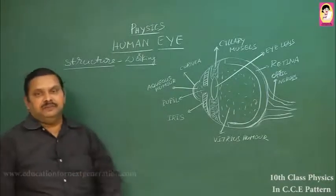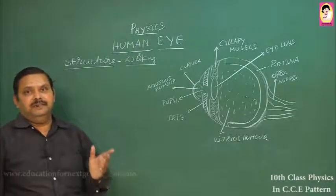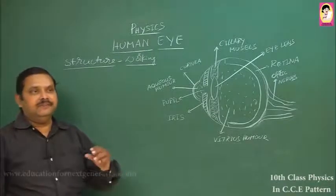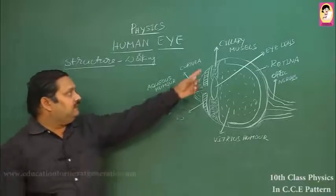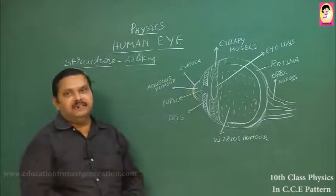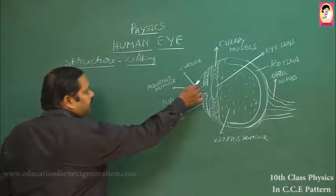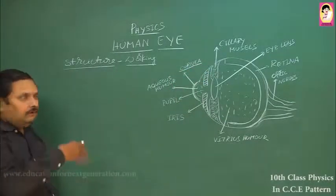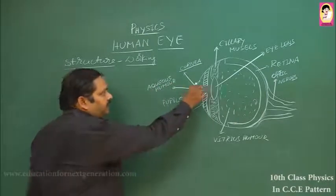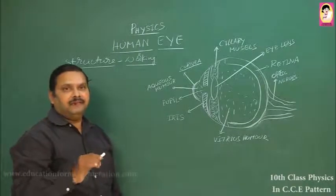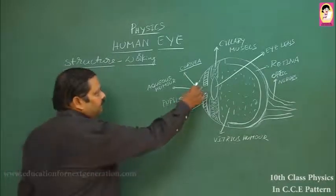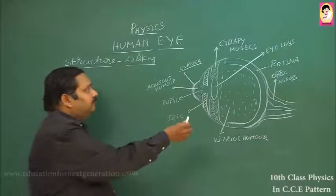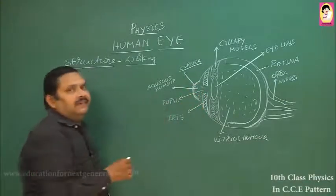Let us come to the structure part first. The human eye is approximately in the shape of a sphere, and its diameter is nearly 2.3 to 2.4 centimeters, which varies slightly from person to person. This is the cross-section of the human eye. The front portion of the human eye which is bulged out is called the cornea. Cornea is a transparent membrane, meaning it allows light rays to pass through. Because of its bulged-out shape, it can accommodate a large number of light rays to enter into the eye. That is the main purpose of the cornea — it increases the accommodation of the eye.